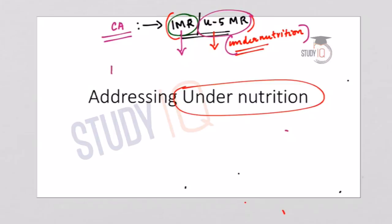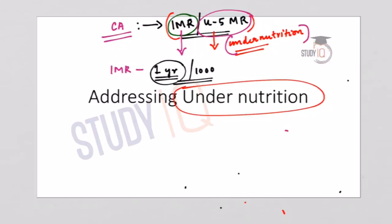Let us first understand what is IMR or infant mortality rate. Infant mortality rate refers to the number of deaths of children under 1 year of age per 1000 live births. In this lecture we will understand what measures are needed in order to address the undernutrition issue in India.